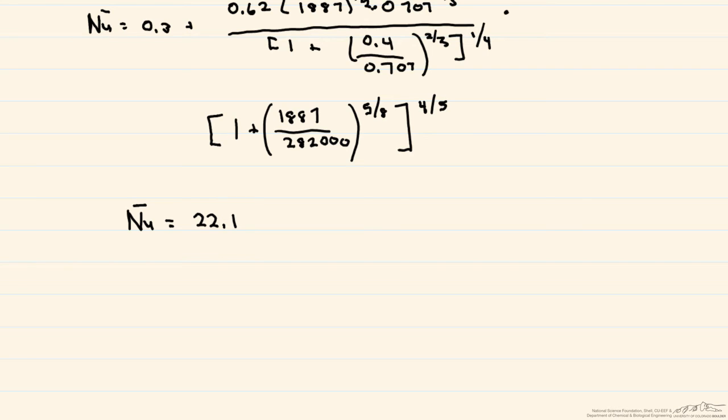Again, the Nusselt number is dimensionless. And one of the things I do want to mention, note that there's a bar over the Nusselt number. That means that we're looking for an average Nusselt number and eventually an average convective heat transfer coefficient.